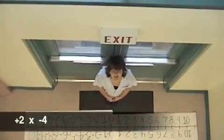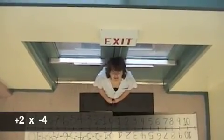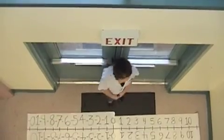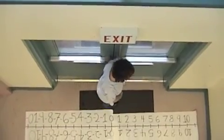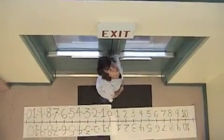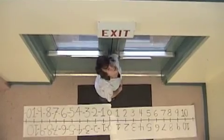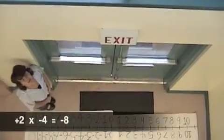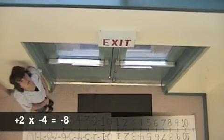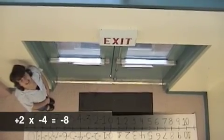Positive 2 times negative 4. The first number tells me to face the positives. The second number tells me to move backwards because it's a negative. I moved negative 4 lines 2 times. So now I'm at negative 8, so that's the answer.